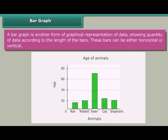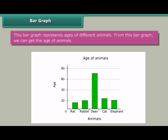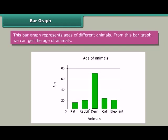Bar graph. A bar graph is another form of graphical representation of data showing the quantity of data according to the length of the bars. These bars can be either horizontal or vertical. This bar graph represents ages of different animals, and from it we can get the age of each animal.